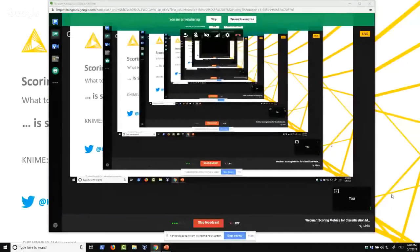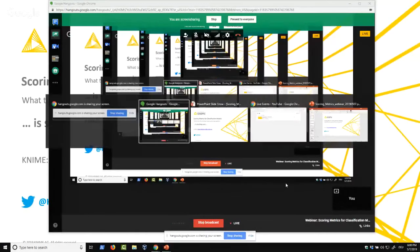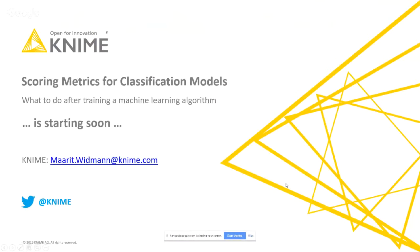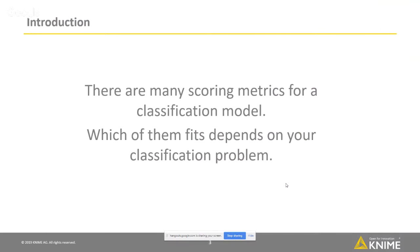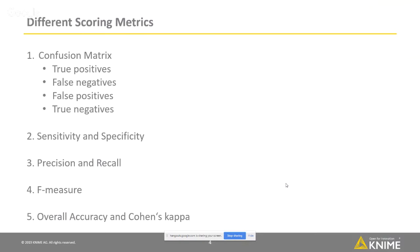Scoring metrics — there are quite a few of them. And the one that you should report, as you will soon see, depends on the concrete problem and the data you have. Here I have collected all the scoring metrics I'm going to introduce today. These are, of course, not all the scoring metrics for a classification model, and there are other techniques, like for example an ROC curve.